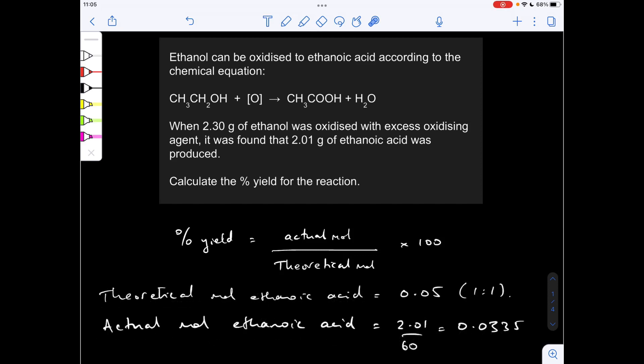So the next thing we do is we look at the actual mass of ethanoic acid that was produced and turn that into moles. So these are going to be our actual moles of ethanoic acid. Mass over MR, 0.0335. And it's these numbers here that we express as a percentage.